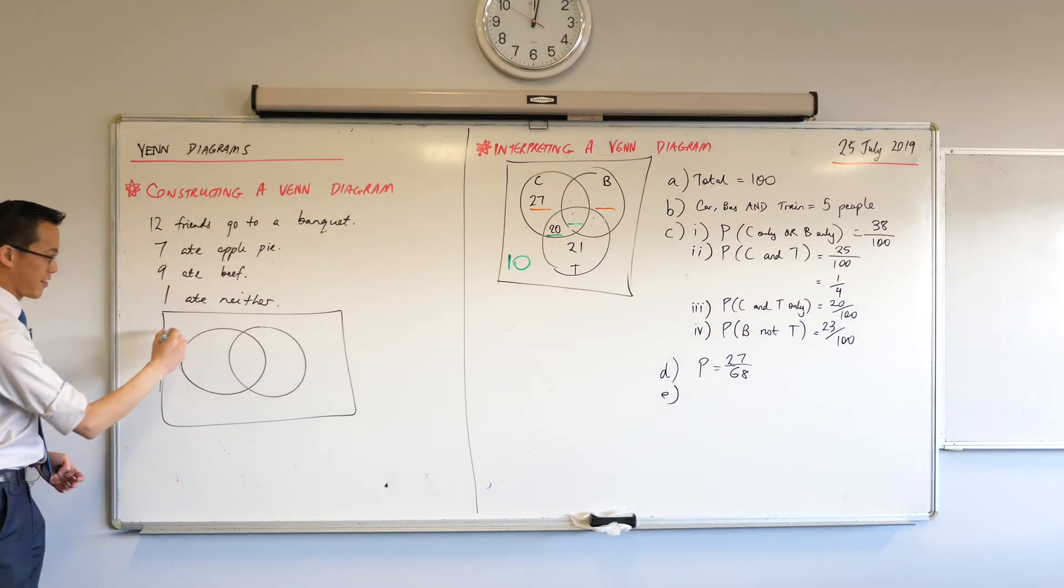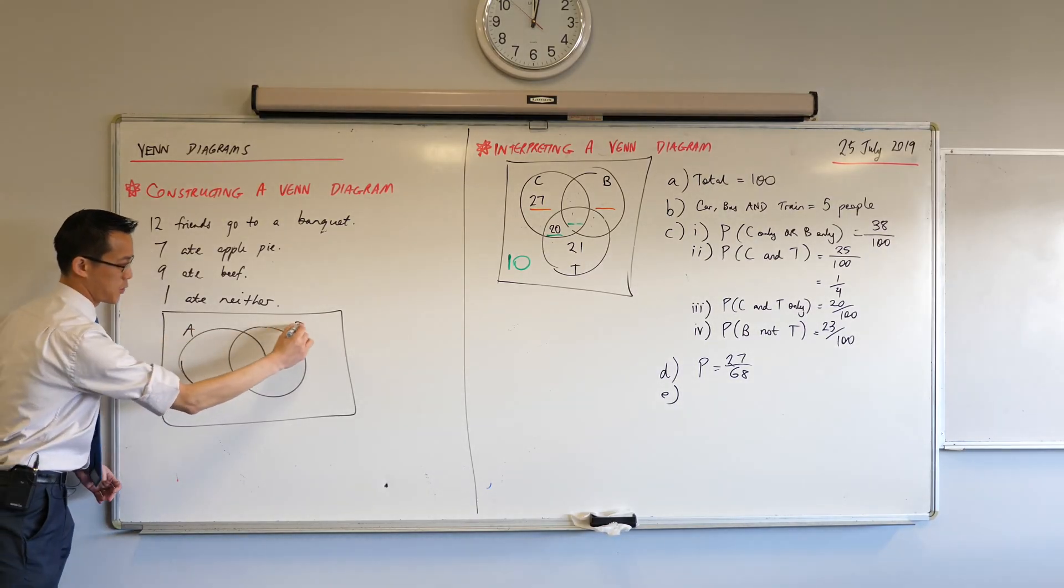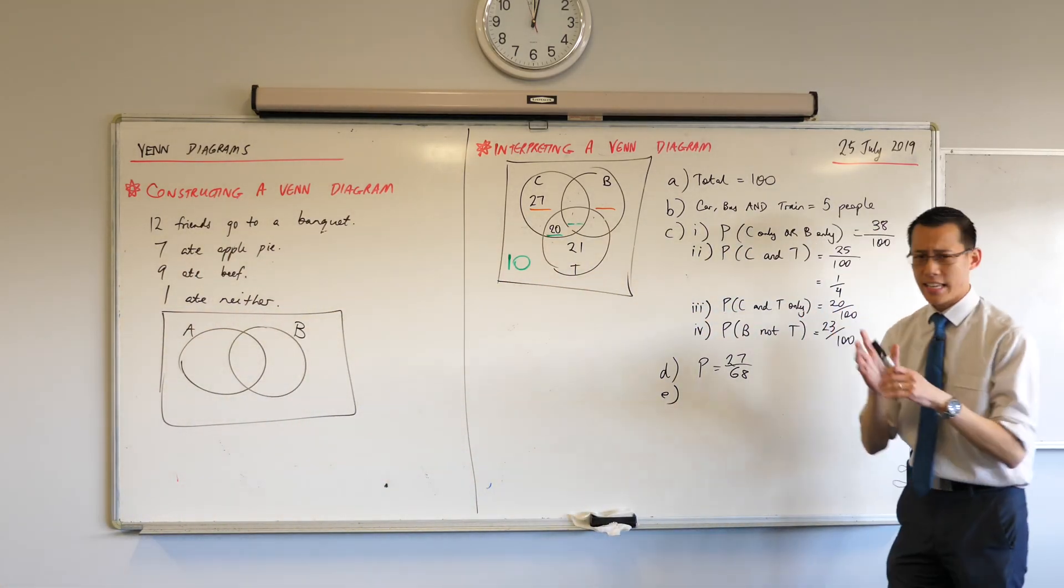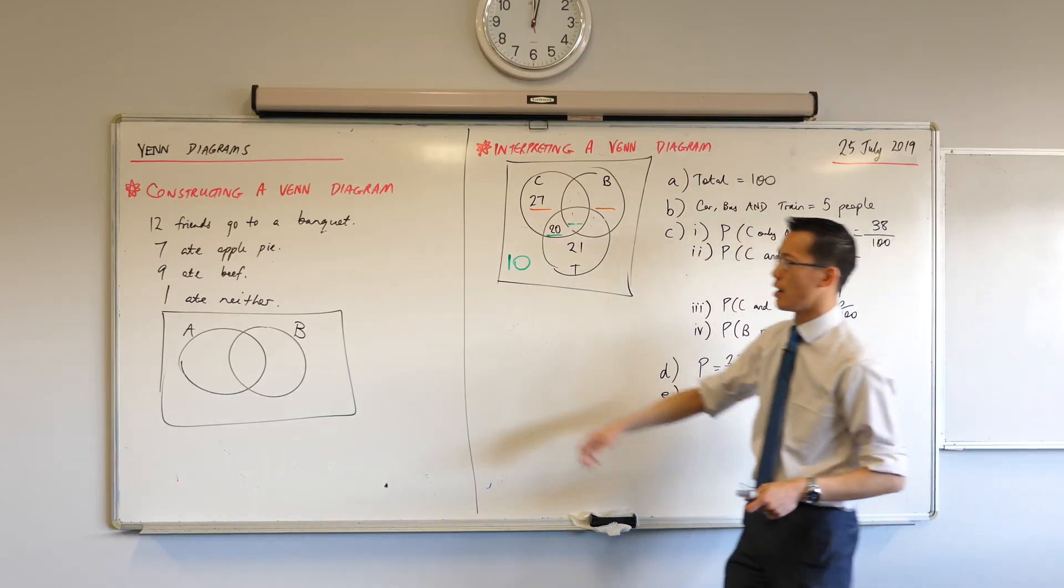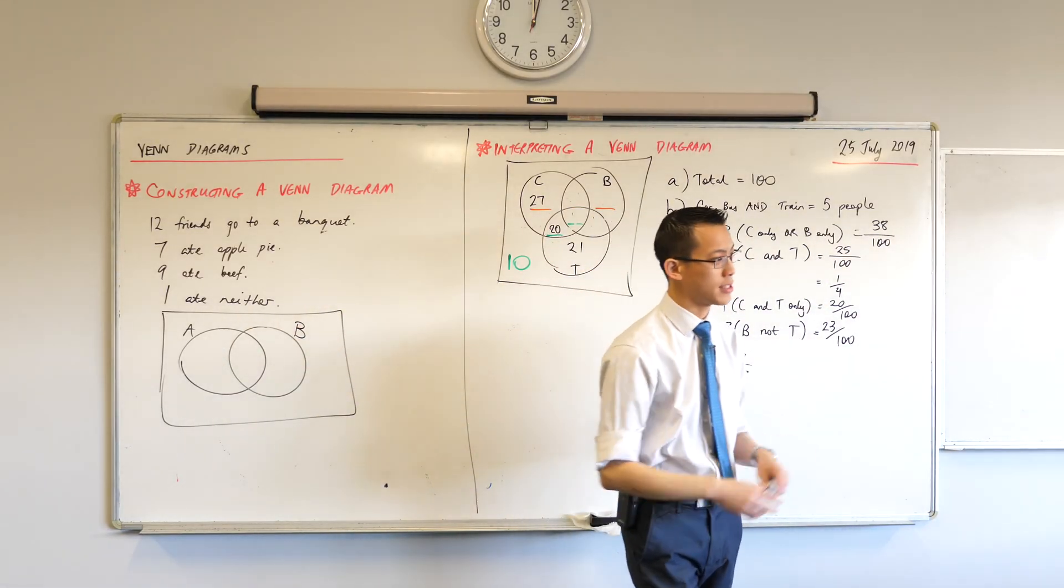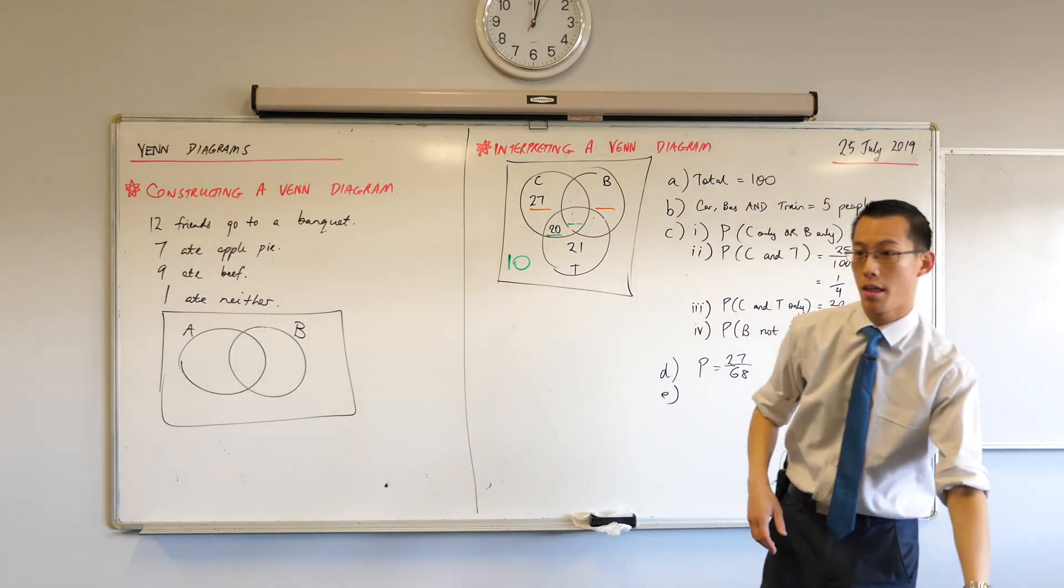Conveniently, one of the things starts with A, and one starts with B, so let's just label those for the circles. Now, let's figure out how we can piece this together. We've got all these numbers here, but I'm just going to say to you right out the gate, some numbers are easier to use than others.